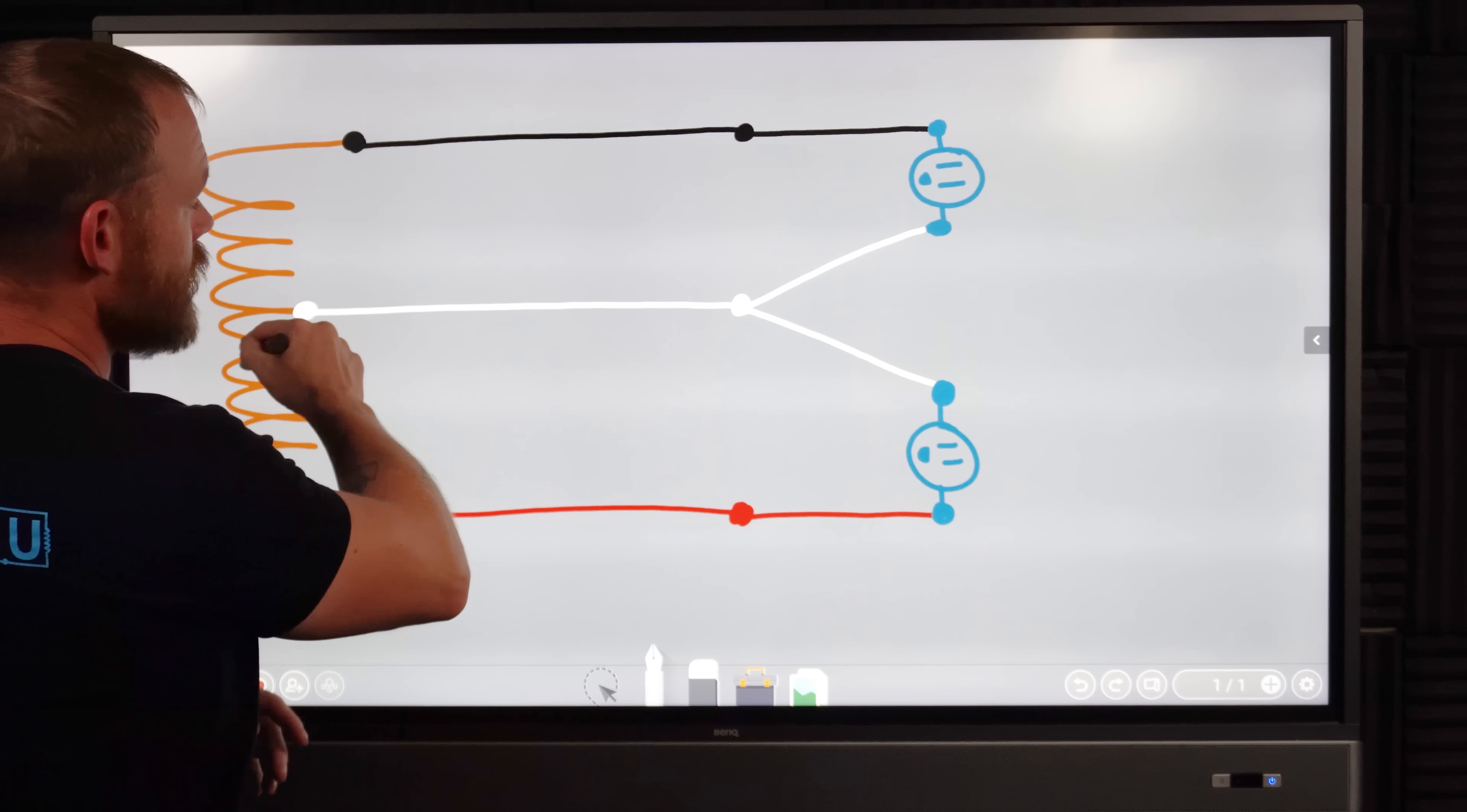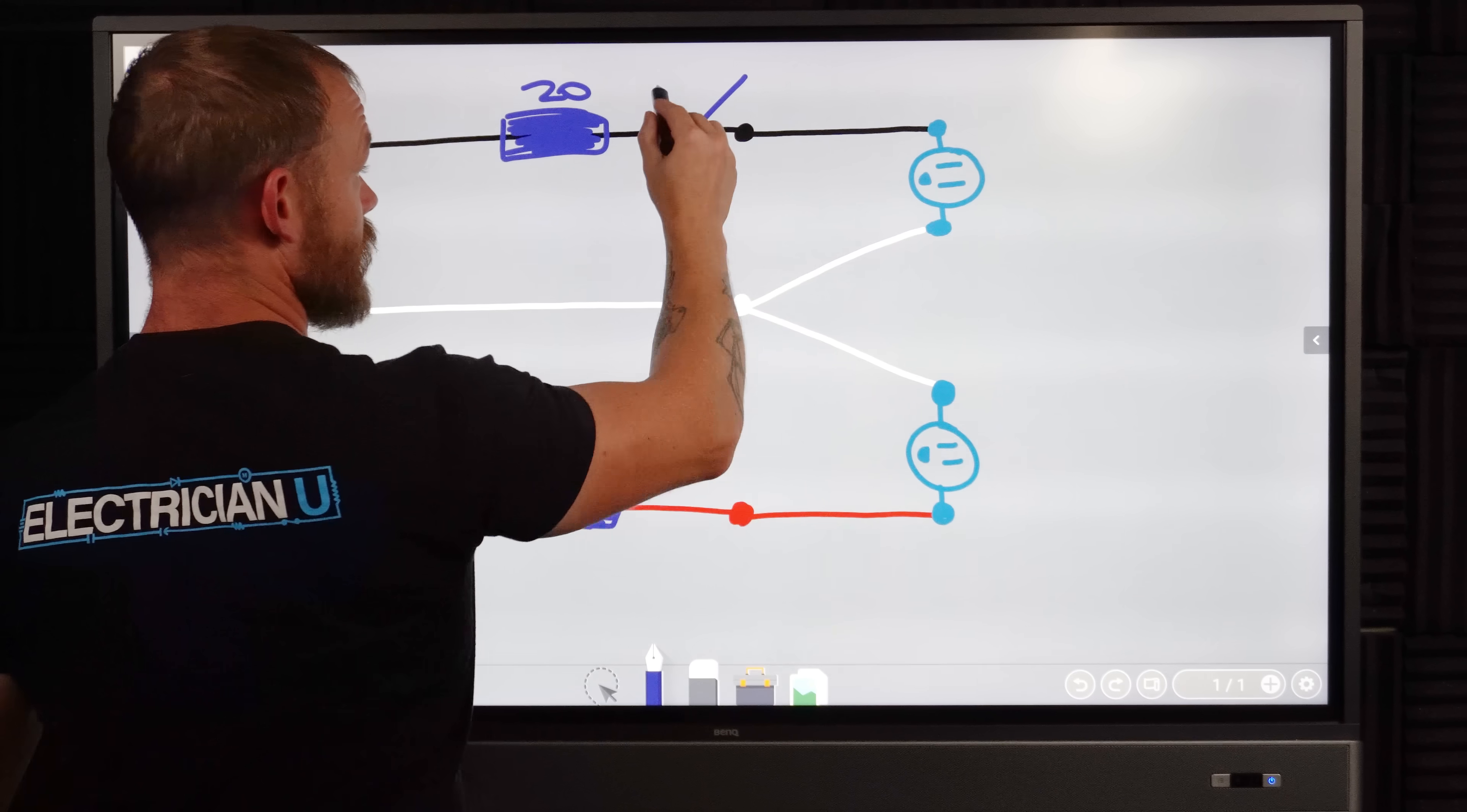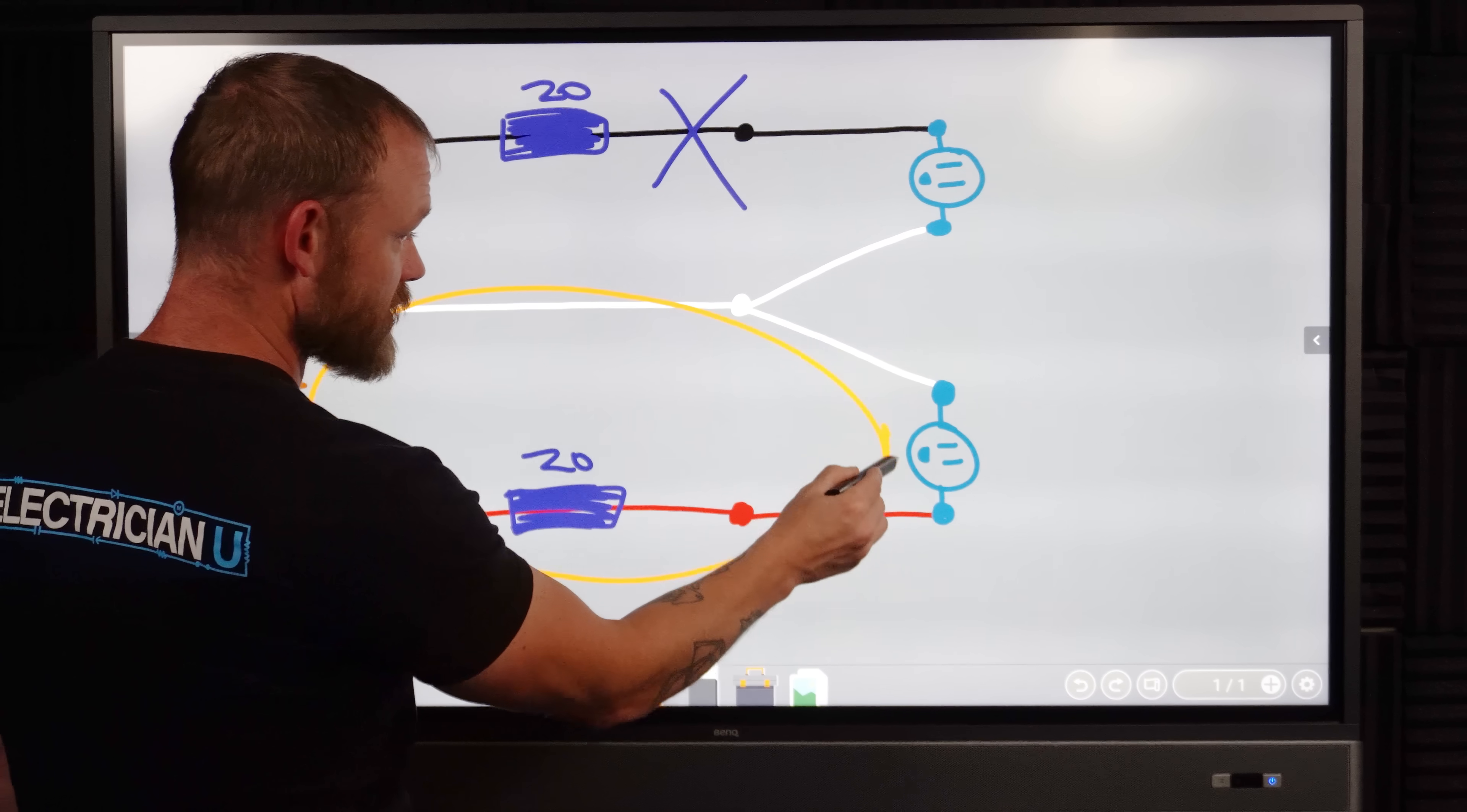We have a black and a white that go out and they share the same exact neutral. And then at a certain point, they split them out into two different things. So what happens is if we, say I've got in my panel, I've got a 20 amp breaker here and I've got a 20 amp breaker here. We don't ever have breakers on neutrals. So we flip the handle of this breaker and we assume this circuit is dead. So we go and we touch this neutral and we're like, oh yeah, I can touch the neutral. I can touch the black. Everything's safe. Right.